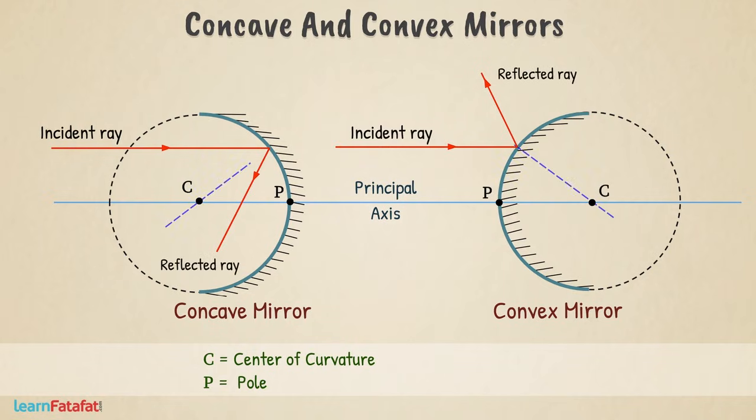A line perpendicular to surface of mirror at the point of incidence is called the normal. Normal of spherical mirror always passes through the centre of curvature.